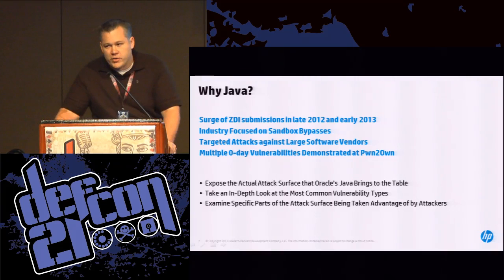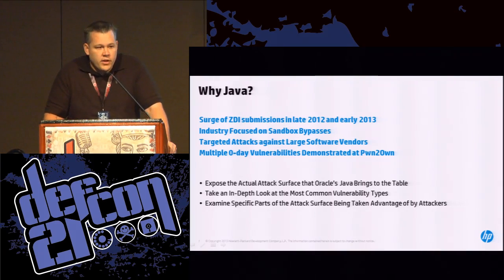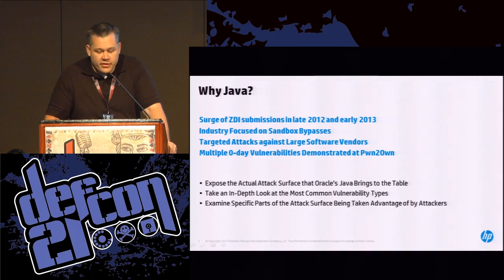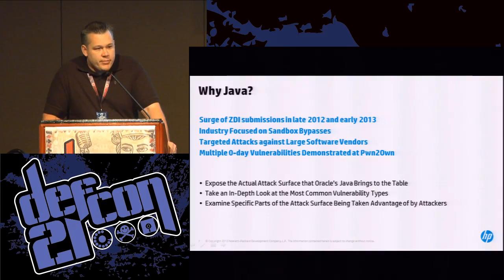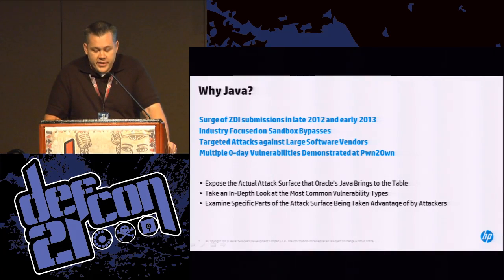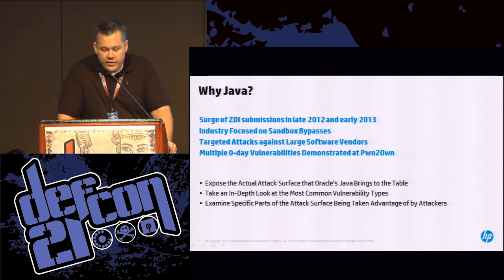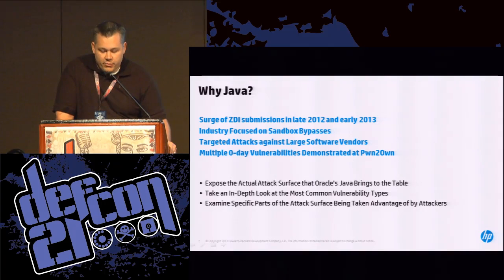We wanted to determine what the most common vulnerability type was, which part of the architecture — specifically the subcomponents — contained the most vulnerabilities and which ones produced the most severe vulnerabilities. We also tied that with what's actually being used in the landscape to determine whether the CVSS scoring system was correct for those vulnerabilities, and we wanted to take an independent look at Oracle's response to the increased vulnerability discoveries in their product.